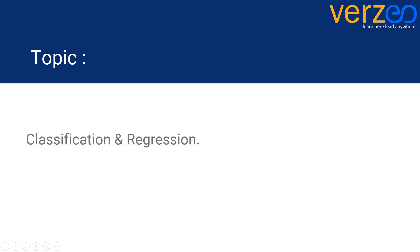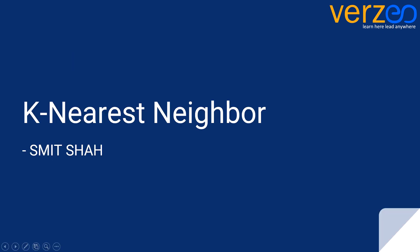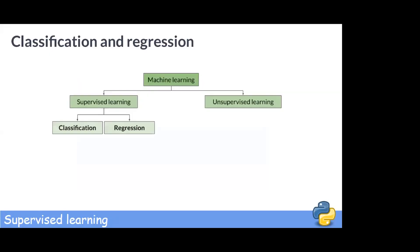Hi guys, so in today's video we will be learning about what classification and regression is in a machine learning model, why they are used, what is their significance, and how they are utilized within the creation and working of a machine learning model. Once learned, classification and regression are very easy steps. Here's Midsha to simplify it for you. There are two flavors of supervised learning: classification and regression.